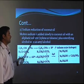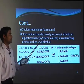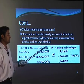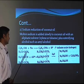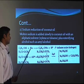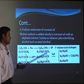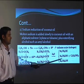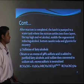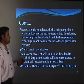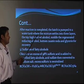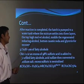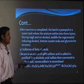The next step is sodium reduction of coconut oil. Molten sodium is added slowly to coconut oil with an aliphatic solvent such as xylene or toluene, plus esterifying alcohols such as amyl alcohols. The alcohol with sodium is reduced to give saturated triglycerides which can be converted to fatty alcohols. After the reaction is completed, the batch is pumped to a water tank where the mixture settles into three layers: the top layer has high molecular weight alcohols, the middle layer is regenerated reducing alcohol, and the bottom layer has caustic soda and glycerin for recovery.